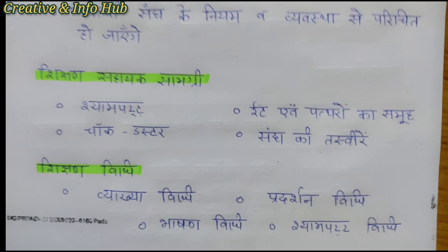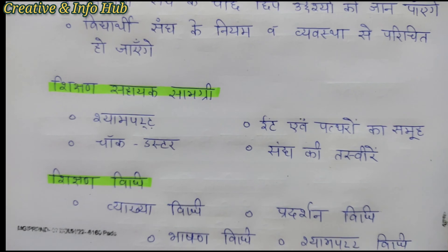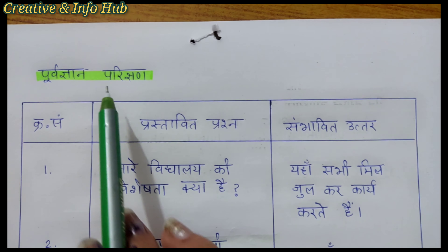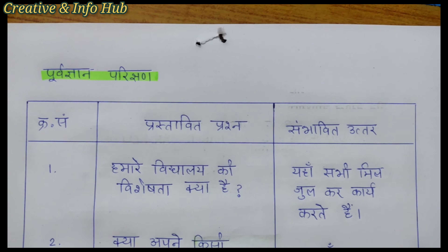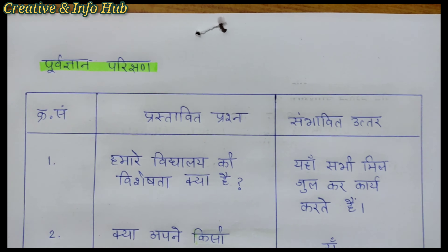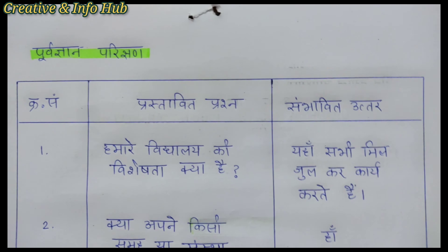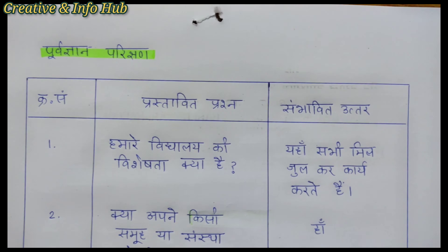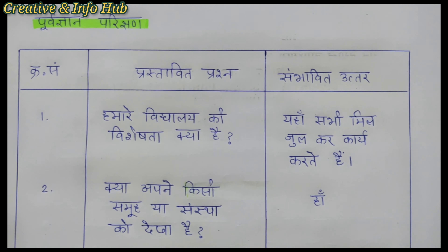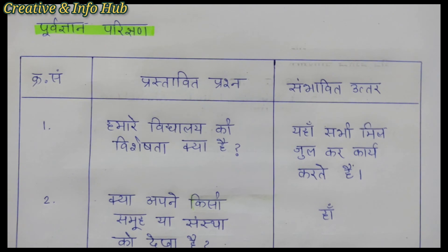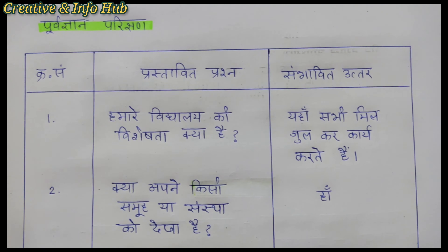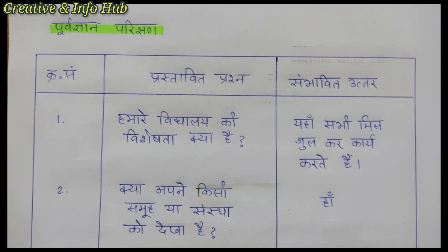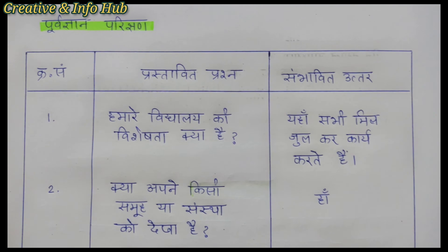For example, the general objective of teaching History is to give children background knowledge about historical events. The specific objective is topic-related. For today's topic 'Sangh,' our specific objectives are: first, students will understand the meaning of Sangh; second, they will understand the purpose behind Sangh; and third, they will become familiar with the rules and organization of Sangh.